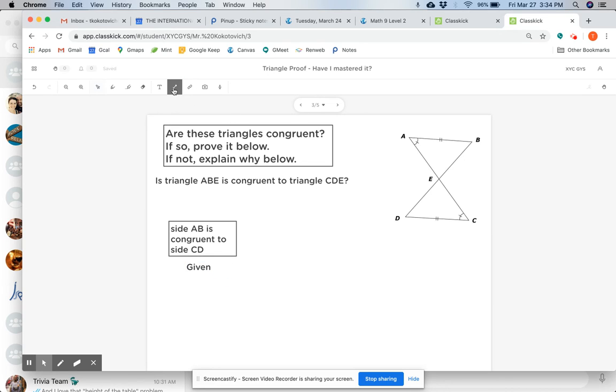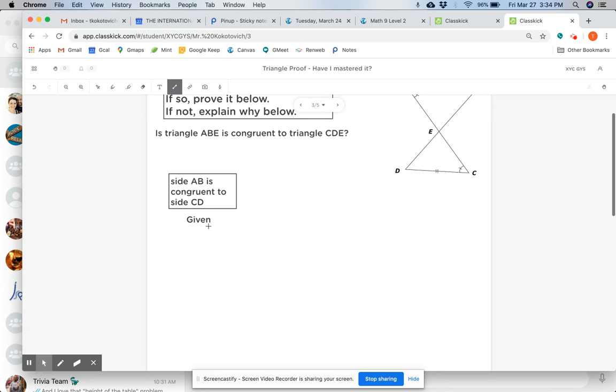Flowcharts also need arrows. You can press the add line button right here and have this going to our final conclusion down here about these two triangles. And if you're really awesome, you can put an arrow right here to show that flow of logic. Thank you very much.